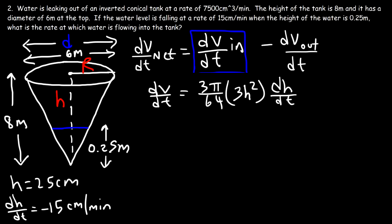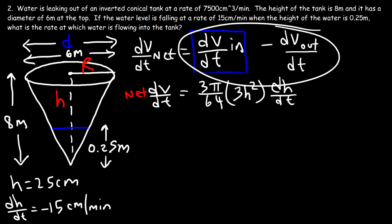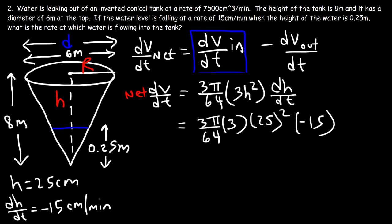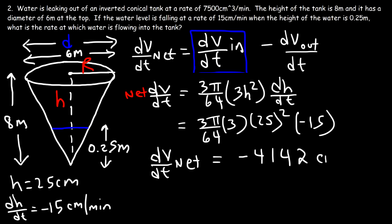It's important to understand that this dV/dt is the net rate at which the volume of water inside the cone is changing — it's the difference between the rate of water flowing in and the rate flowing out. Plugging in h equals 25 and dh/dt equals negative 15: computing 3π times 3 times 25 squared times negative 15, divided by 64, the net dV/dt is approximately negative 4,142 cubic centimeters per minute.